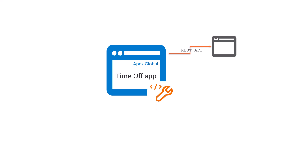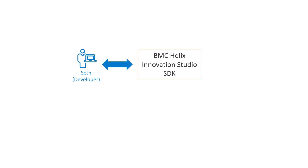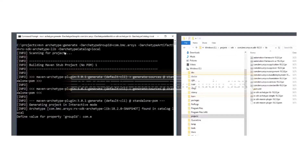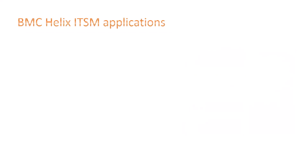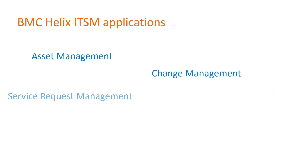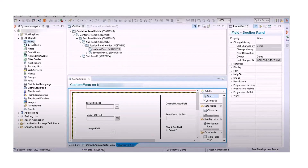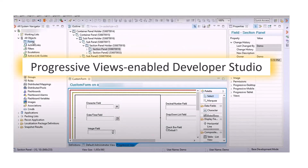Let's see an example. Apex Global wants to create a leave management application and integrate it with another application. Seth uses BMC Helix Innovation Studio SDK to create a code-based leave management application. Additionally, if Apex Global wants to make changes to an ITSM application that is provided out-of-the-box, Seth can customize the application by using Developer Studio.